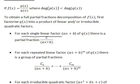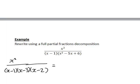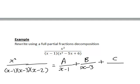For each single linear factor we can rewrite this as a partial fraction with a constant divided by that linear factor, and we add these together when there are several of them. So we rewrite this as a constant a over the first linear factor (x minus 1), plus another constant b divided by the second linear factor (x minus 3), plus a third constant c divided by the third factor (x minus 2). We now need to find a, b, and c.